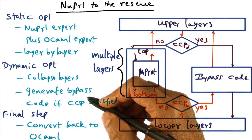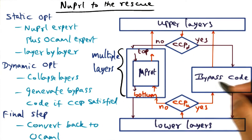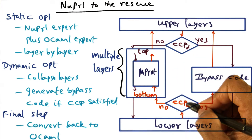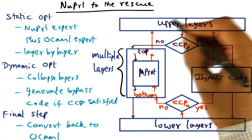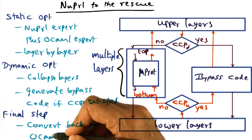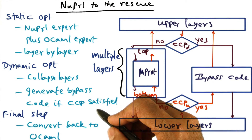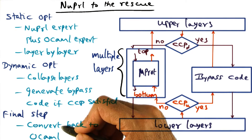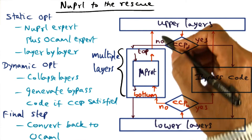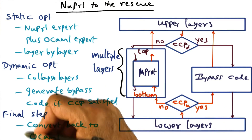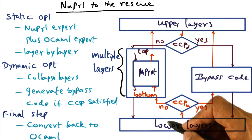Once we have done this dynamic optimization — collapsing the layers, generating the bypass code, starting with the common case predicate derived from the micro protocols — we are ready to convert the optimized NuPRL code back to OCaml. There is a straightforward tool available that converts NuPRL code to OCaml code. The final OCaml code generated through this conversion process is the optimized version of the original OCaml code, and the theorem proving framework can assert that the original unoptimized OCaml code is equivalent to the new optimized OCaml code.